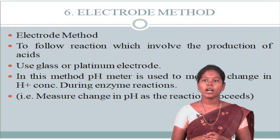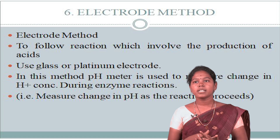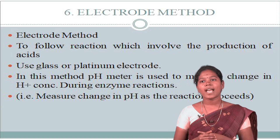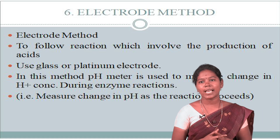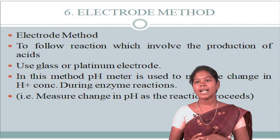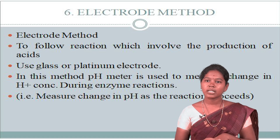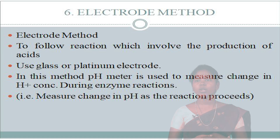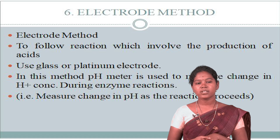The sixth method is the electrode method. Electrode methods use pH meters to follow reactions which involve the production of acid, using glass or platinum electrodes. In this method, a pH meter is used to measure the change in hydrogen ion concentration during the enzyme reaction — for example, measuring the change in pH as the reaction proceeds.